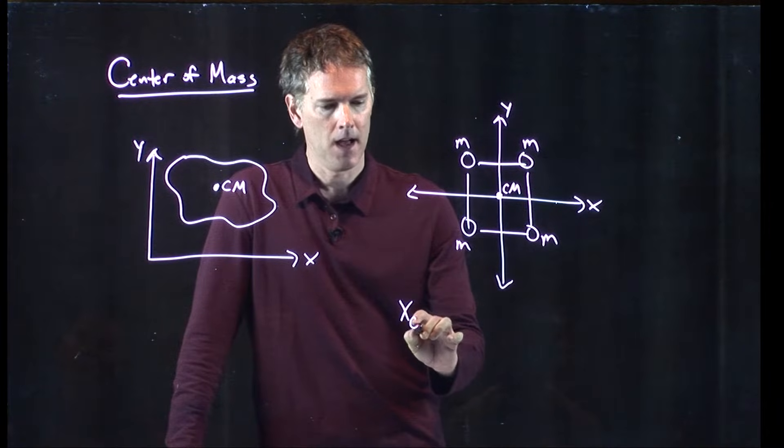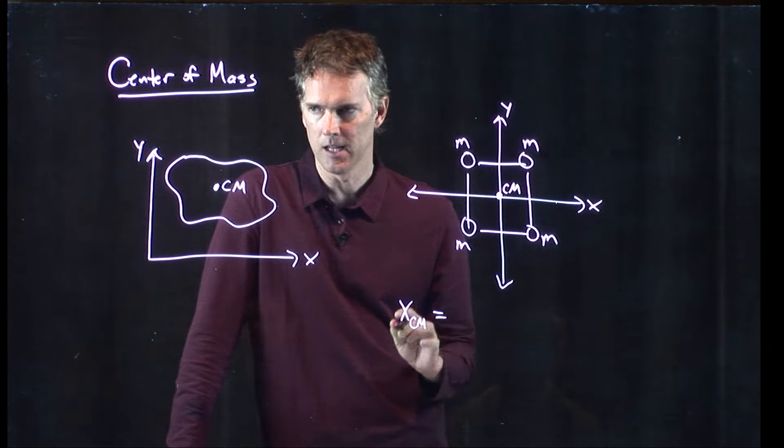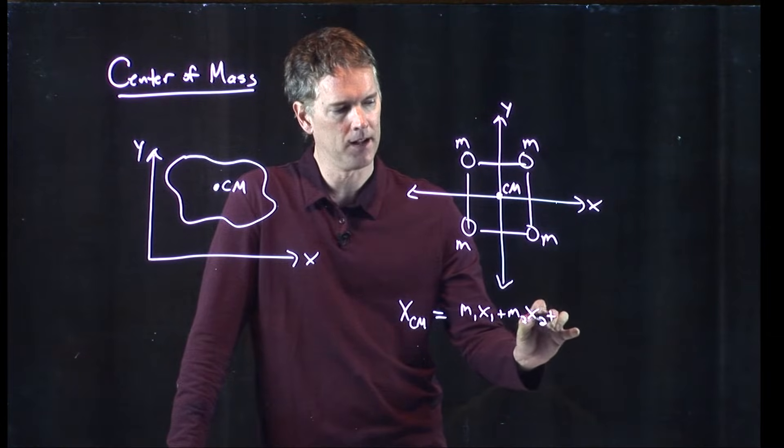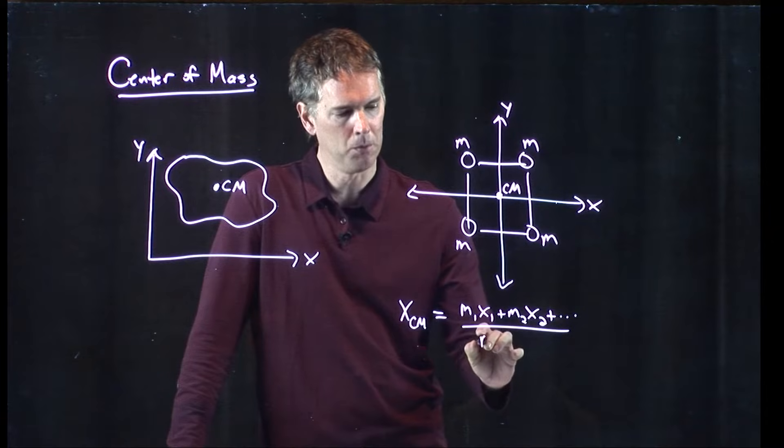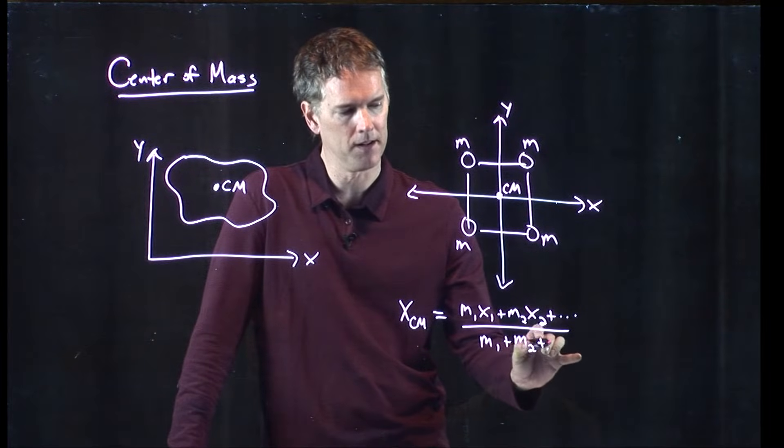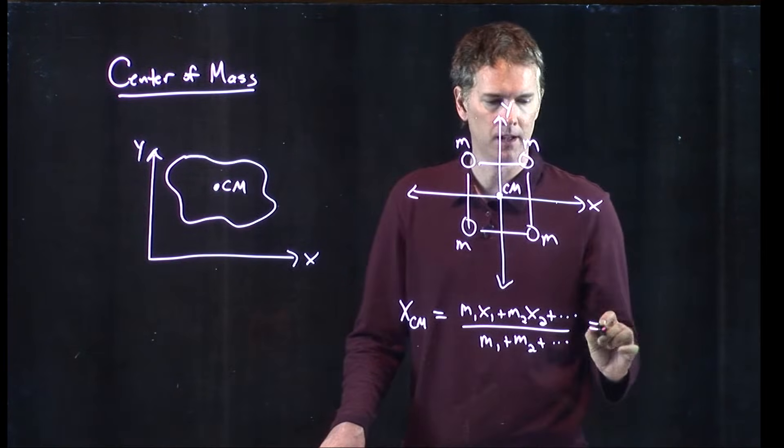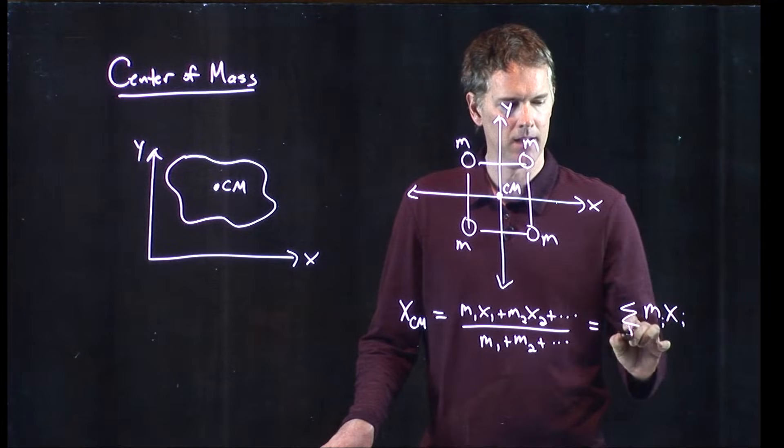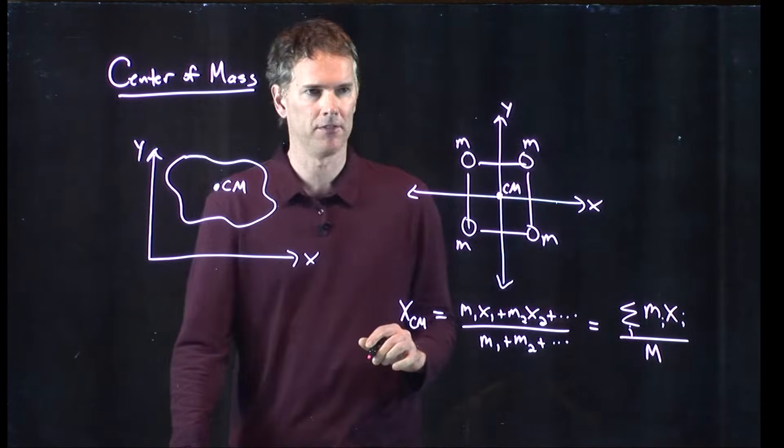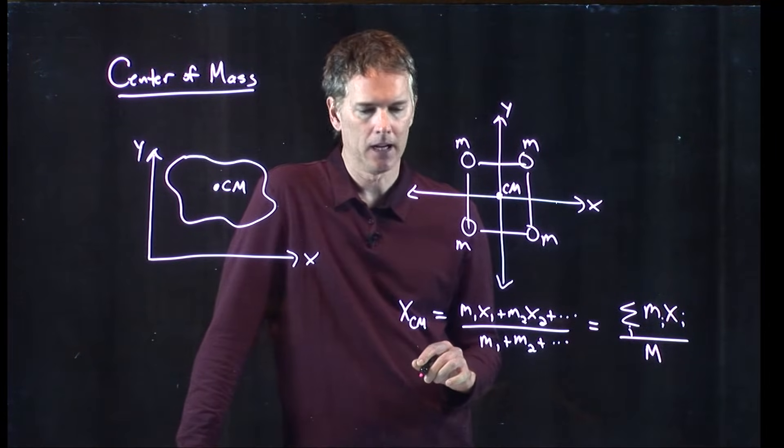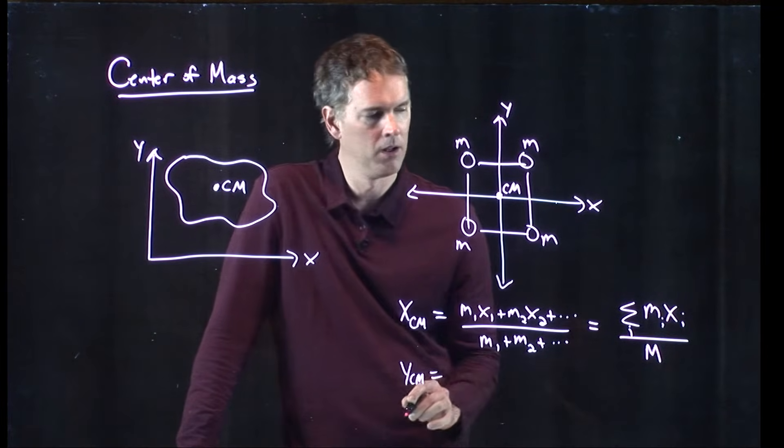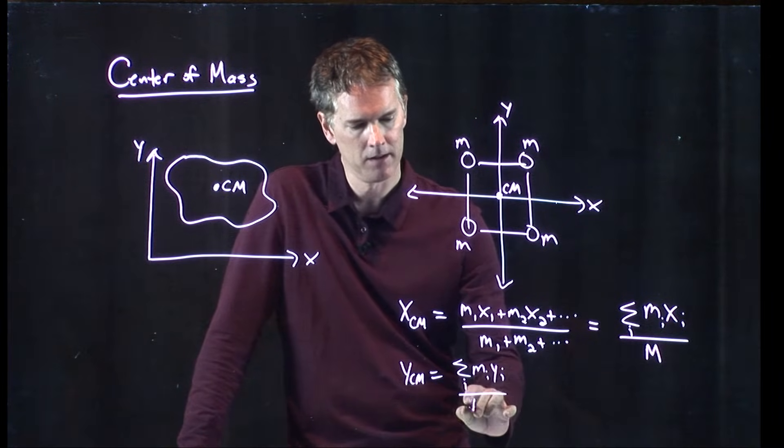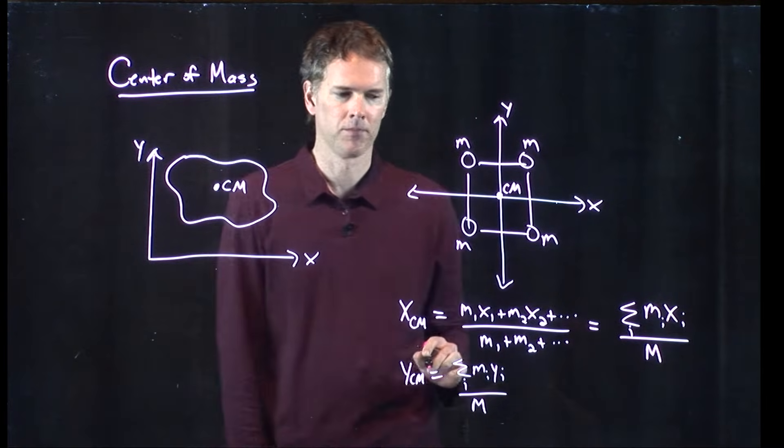How do I write down an equation that tells me that? I do the following. X position of the center of mass is: m1 x1 plus m2 x2 plus dot dot dot, and I divide by the total mass: m1 plus m2 plus dot dot dot. I can rewrite this as a summation. It's the sum of m sub i x sub i divided by capital M, the total mass of the system. And I can, of course, do the same thing for the y center of mass. Y center of mass is going to be the sum over i, m sub i, y sub i, divided by the total mass.